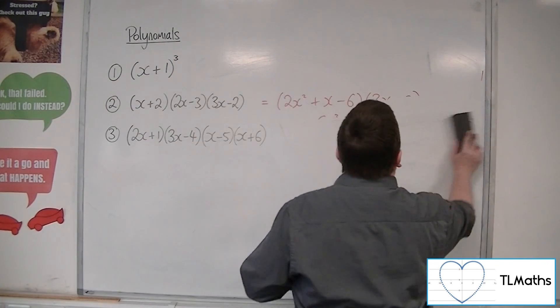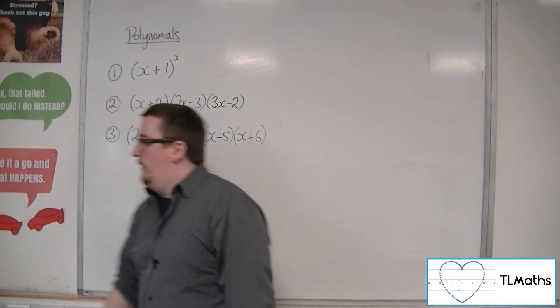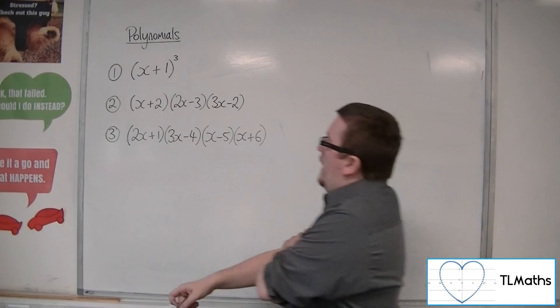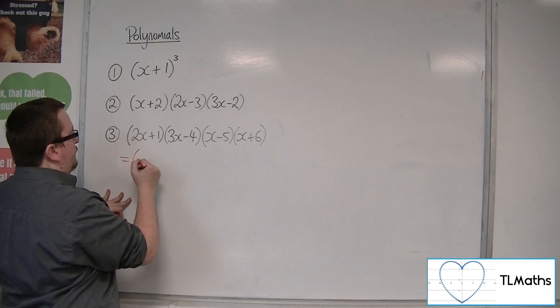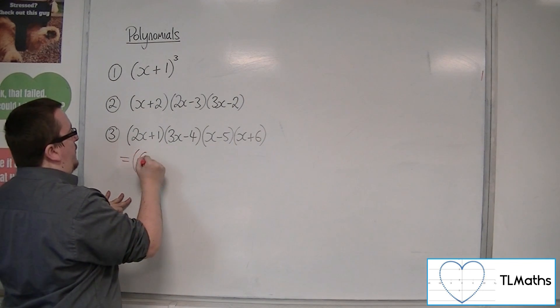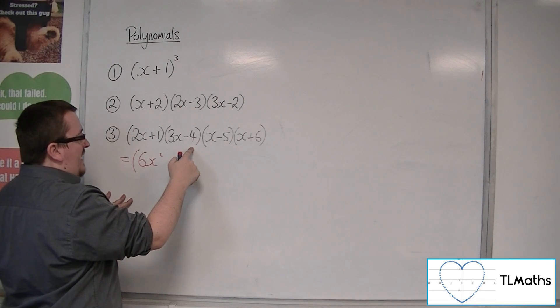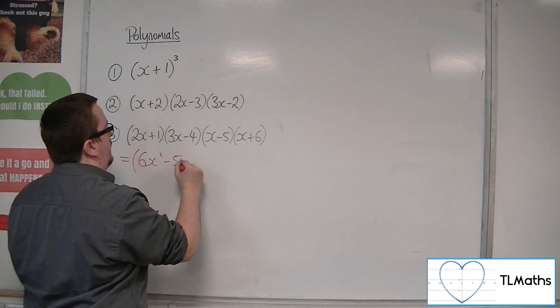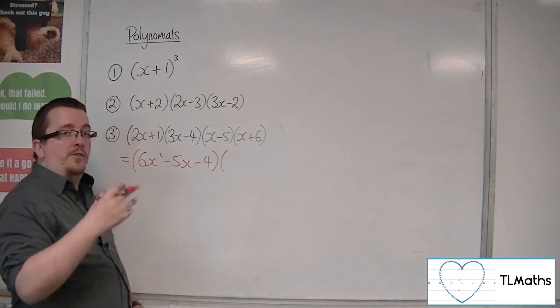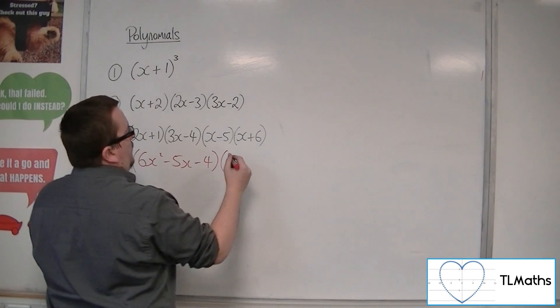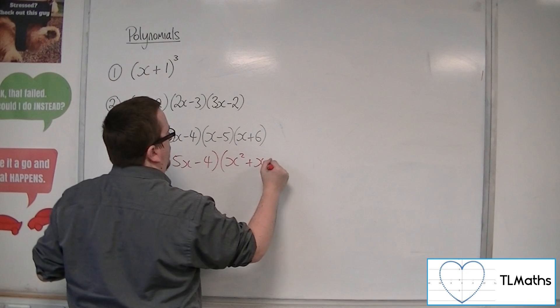And then the third, this time we've got four brackets. So what I would do at this stage is expand the first two brackets. So 2x times 3x makes 6x², 2x times -4 is -8x, +3x and -5x, and we're going to get -4. And then I would expand the second two brackets, so we're going to get x² + x - 30.